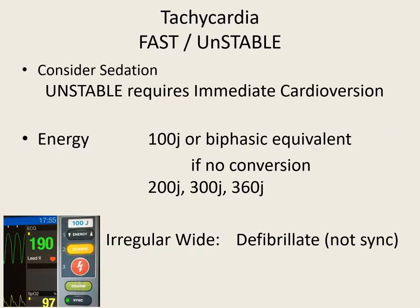If they are fast and unstable — unstable meaning they have a serious sign and symptom: altered mental status, acute heart failure, chest pain, hypotension, signs and symptoms of shock — if they have one of those, they are unstable. If they are fast, over 150 beats a minute, it doesn't matter if it's narrow or wide. If they are fast and unstable, they need immediate synchronized cardioversion.